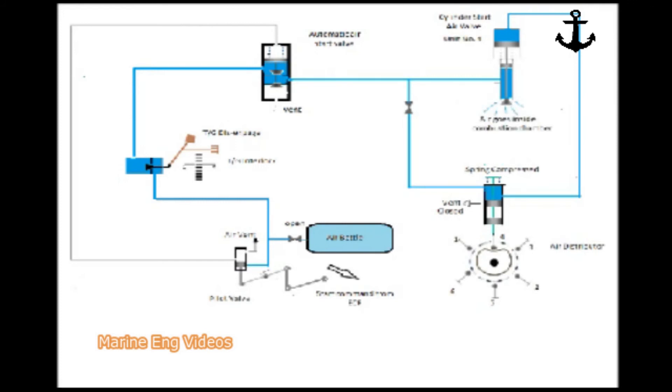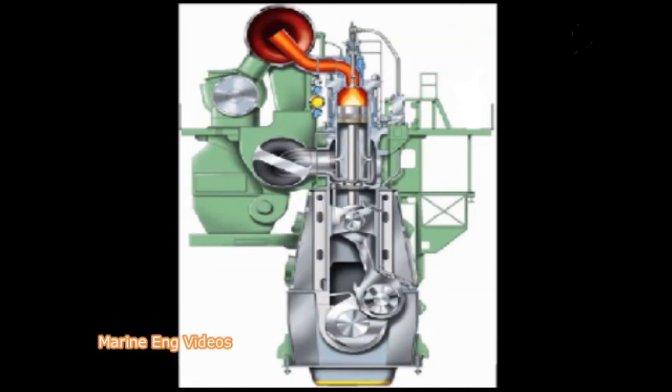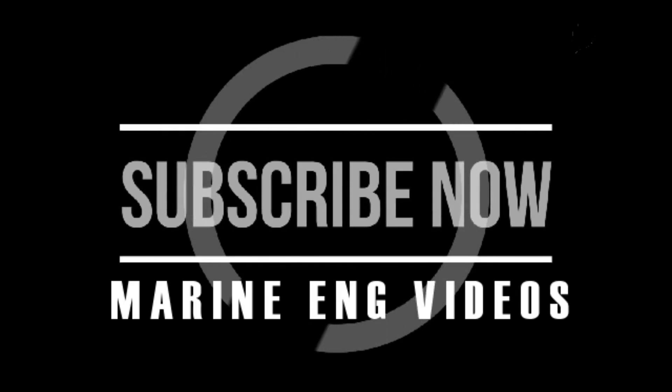As the camshaft rotates, the unit number 4 line is vented and the cylinder head starting air valve closes. Now the unit number 1 valve will be in contact with the cam profile and the air is injected in this unit. The air injection in the cylinder is done as per the firing order of the engine.